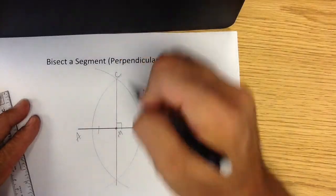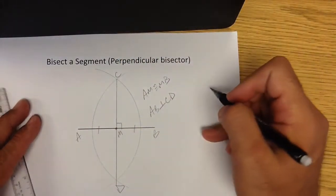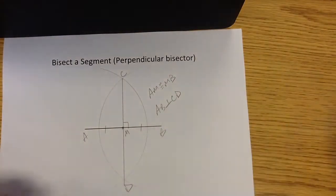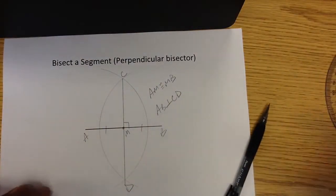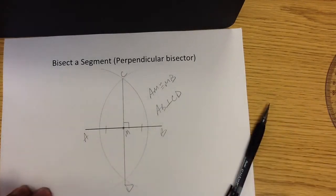So if I label this C and D I could say that AB was perpendicular to CD. So that's what we call a perpendicular bisector. Remember you're going to open up your compass so it's about three quarters the length of the segment and draw two big arcs.